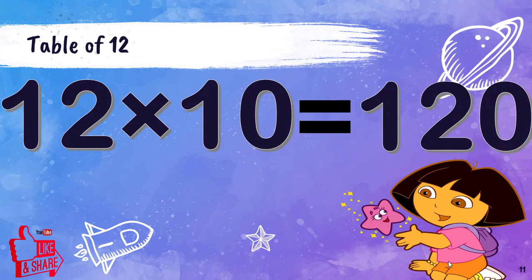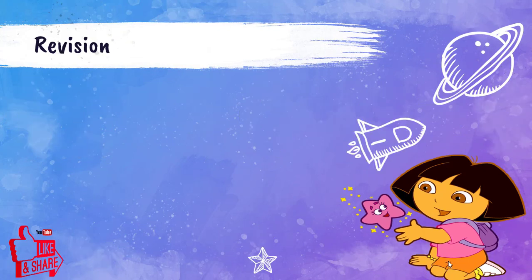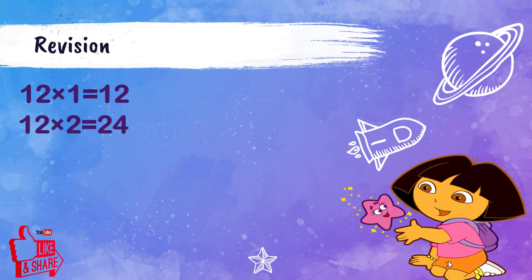Now let's revise children. 12 1s are 12. 12 2s are 24. 12 3s are 36.